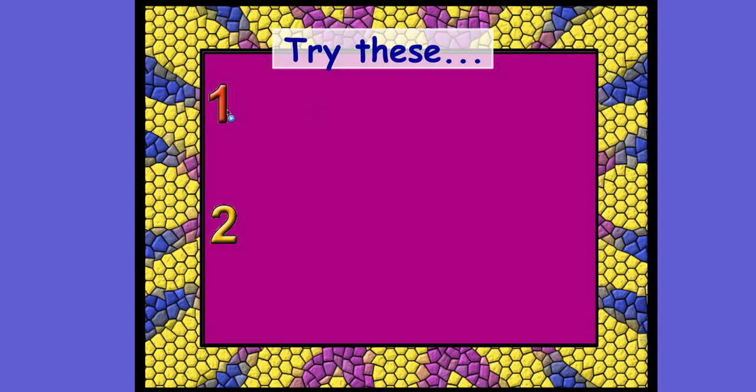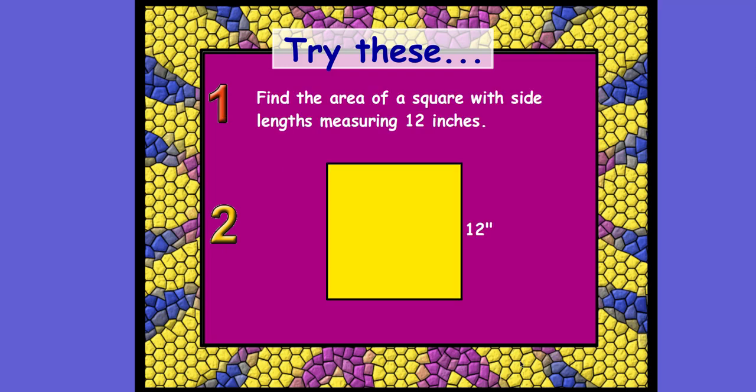Okay, I want you to try these. Pause your video and see if you can do this yourself. Okay, to find the area of a square with side lengths measuring 12 inches. Remember, if this is a square, if this is 12, so is this, so is this, and so is this. All sides are the same length. The formula for finding the area of a rectangle, and a square is a rectangle, area equals base times height, area equals 12 times 12. So the area equals 144 inches squared.